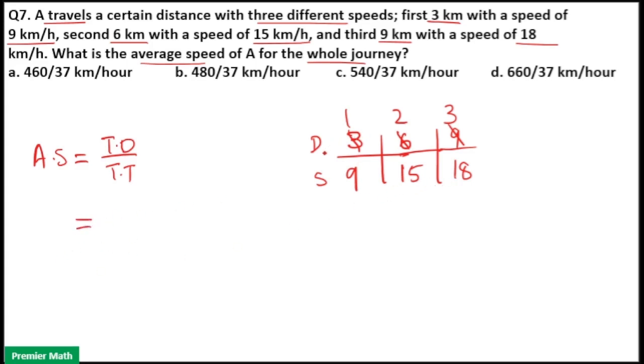Total distance is 1 plus 2 plus 3 is 6, divided by time which is equal to 1 by 9 plus 2 by 15 plus 3 by 18. Take the LCM of 9, 15 and 18.